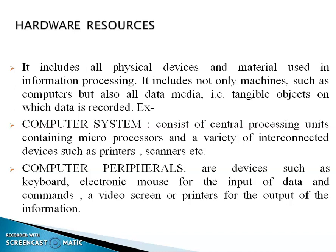There also comes your computer system, which is very important — without this we cannot call it an information technology system. This includes your CPU units, microprocessor units, and a variety of interconnected devices such as scanners. Nowadays we are not using standalone systems; we connect them through wide or wireless connections, and this entire setup comes under the computer system. Computer peripherals — the external devices you connect to your computer, like keyboard, mouse, input and output devices — also come under hardware resources.